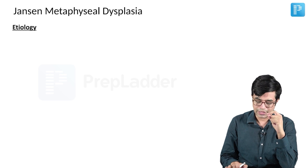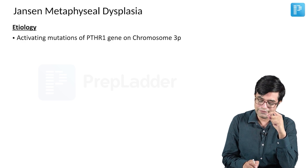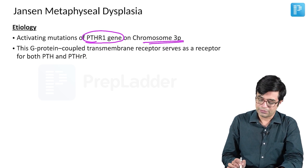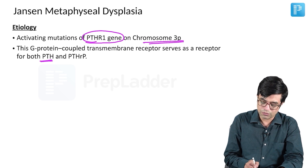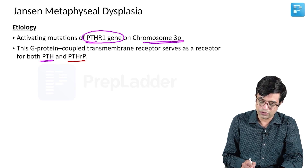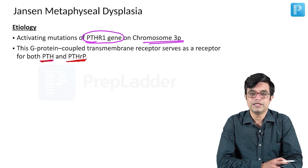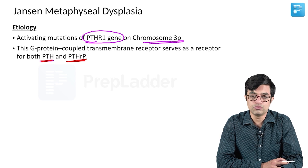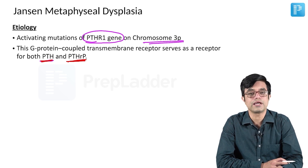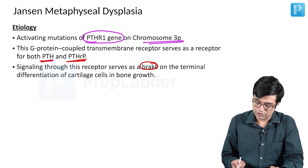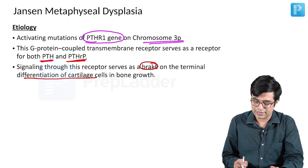Janssen's Metaphysial Dysplasia etiology: it involves activating mutations in the PTHR1 gene present on chromosome 3P. This is a G-protein coupled receptor which serves as a receptor for both parathyroid hormone as well as parathyroid hormone-related peptide. PTHrP is commonly produced by various tumours and produces hypercalcemia as a paraneoplastic syndrome. This receptor can be activated by both of them.